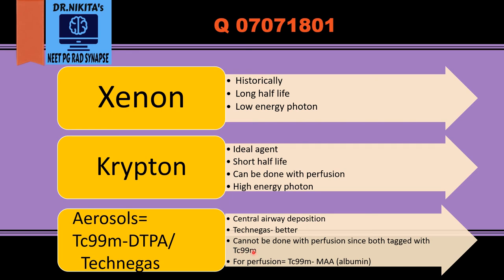Aerosols cannot be used simultaneously with perfusion — ventilation and perfusion have to be done one after the other. This is because for perfusion we use technetium-99m MAA (macro-aggregated albumin), and the aerosols are also tagged with technetium-99m. Since both are tagged with the same isotope, they cannot be used simultaneously.